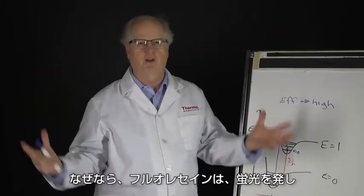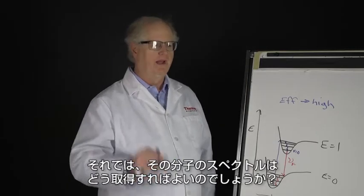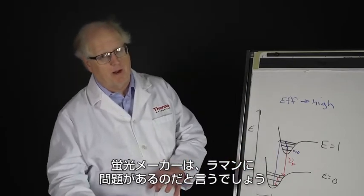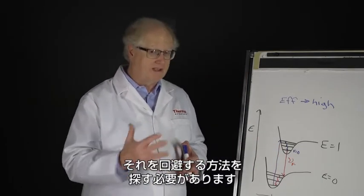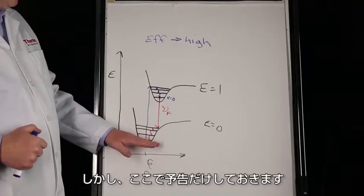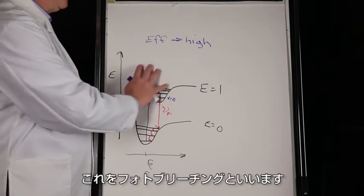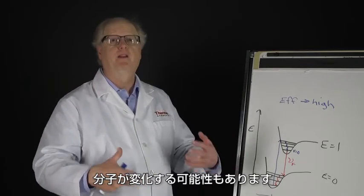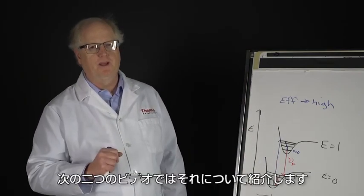If you try taking the Raman spectrum of a highly colored, fluorescent molecule using a 532 nm excitation laser, the fluorescence is going to overwhelm you — it's going to fill the whole detector with fluorescence and you won't see the Raman signal. So how do you get the Raman spectrum of a molecule that fluoresces? One thing you can do is try to burn out the electronic transition by hitting it with enough photons — that's called photobleaching. It comes with some risk and the probability that you're changing the molecule. There are other sneaky ways to get around fluorescence, and that's what we'll begin to look at in the next couple of videos.